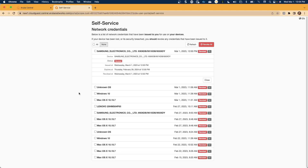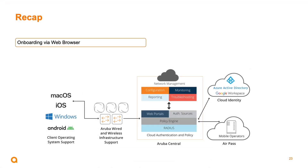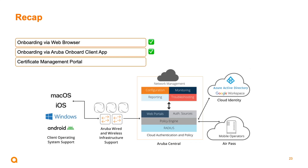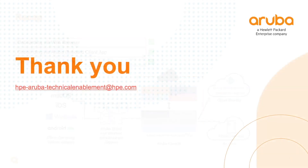Let's take a quick recap of what we've covered during today's presentation. We started out by discussing onboarding via web browser. We then moved into onboarding via the Aruba Onboard Client application for both Mac OS and Windows PCs. And then we showed the certificate management portal, how to revoke certificates issued, as well as to see the number of certificates issued and device names, as well as the certificate validity period for each device. That's all we have for today's presentation — thanks again for joining us for this video in our series on Aruba Cloud Authentication. If you have any questions, please feel free to reach out utilizing the email distribution list shown here on the screen.